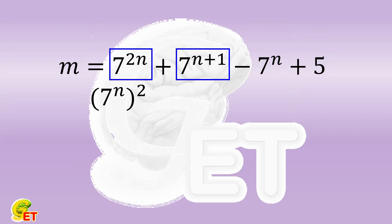7 to the power of n plus 1 is 7 times 7 to the power of n. We also have a term of minus 7 to the power of n. As a result, we have 6 times 7 to the power of n.